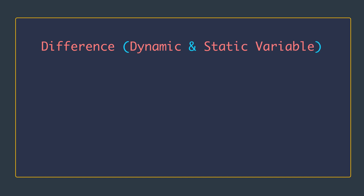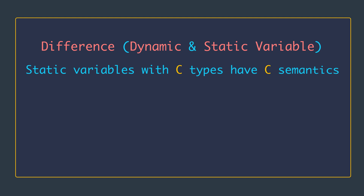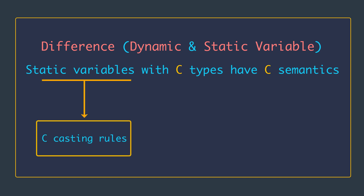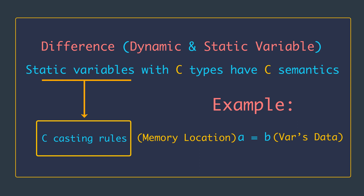An important difference between dynamic and static variables is that static variables with the C types have C semantics, which changes the behavior of assignment. It also means these variables follow C casting rules. For example, 'a = b' copies the integer data at b to the memory location reserved for a, meaning a and b refer to independent entities and can evolve separately.